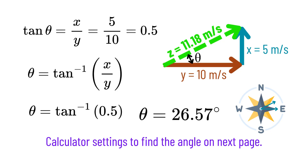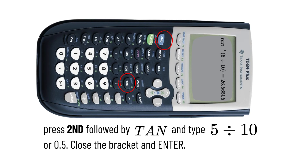The next step is to find the angle theta: tan θ = x/y. Here, x = 5 and y = 10, so tan θ = 5/10 = 0.5. To find theta, we take the inverse: θ = tan⁻¹(0.5) = 26.57 degrees. To find tan inverse, you may use your calculator — for example, the TI-84. Press 2nd followed by TAN, type 0.5, close the bracket, and press Enter.